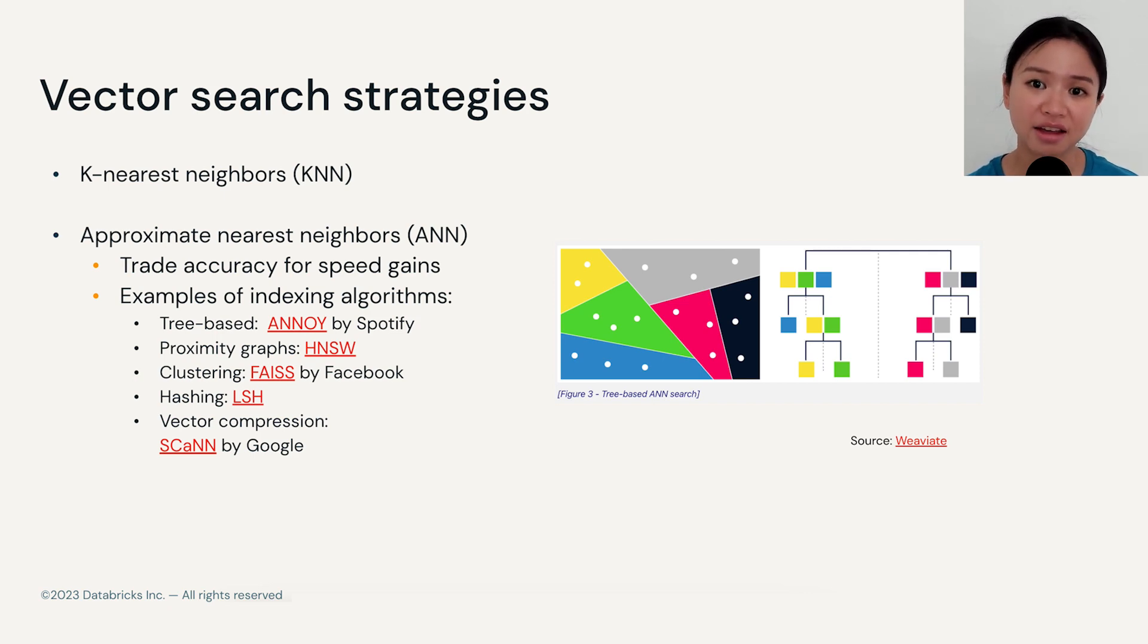Generally, with ANN, approximate nearest neighbor search, you are finding less accurate nearest neighbors, but you are gaining in speed.